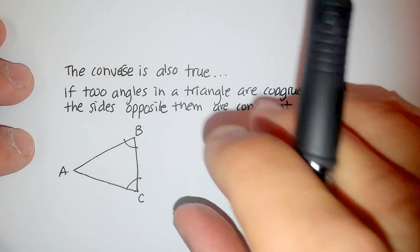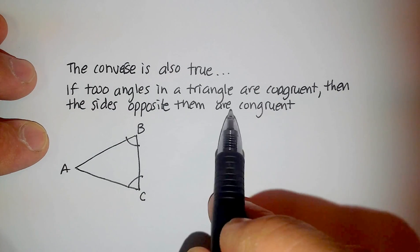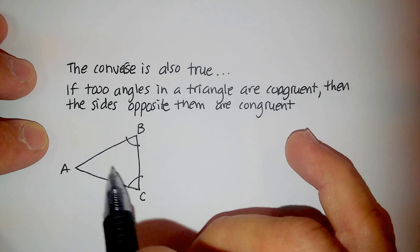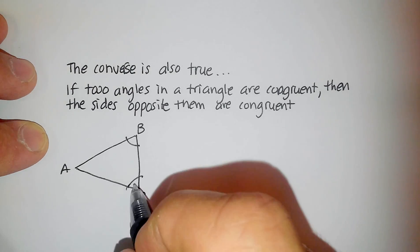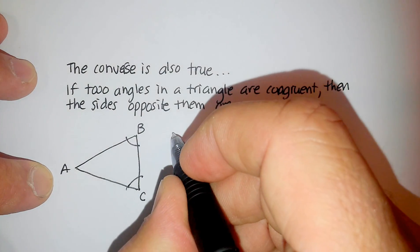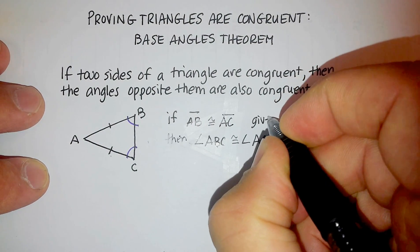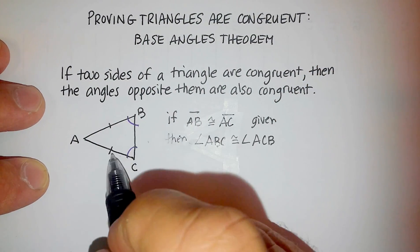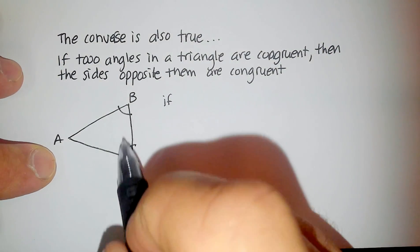So let's look. If two angles in a triangle are congruent, then the sides opposite them are congruent. Now, what are the two angles here that are congruent? Well, again, because of these little marks, I know that angle, and by the way, I should go back up here. This is a given, right? It's given because of those slash marks. In the same way down here.